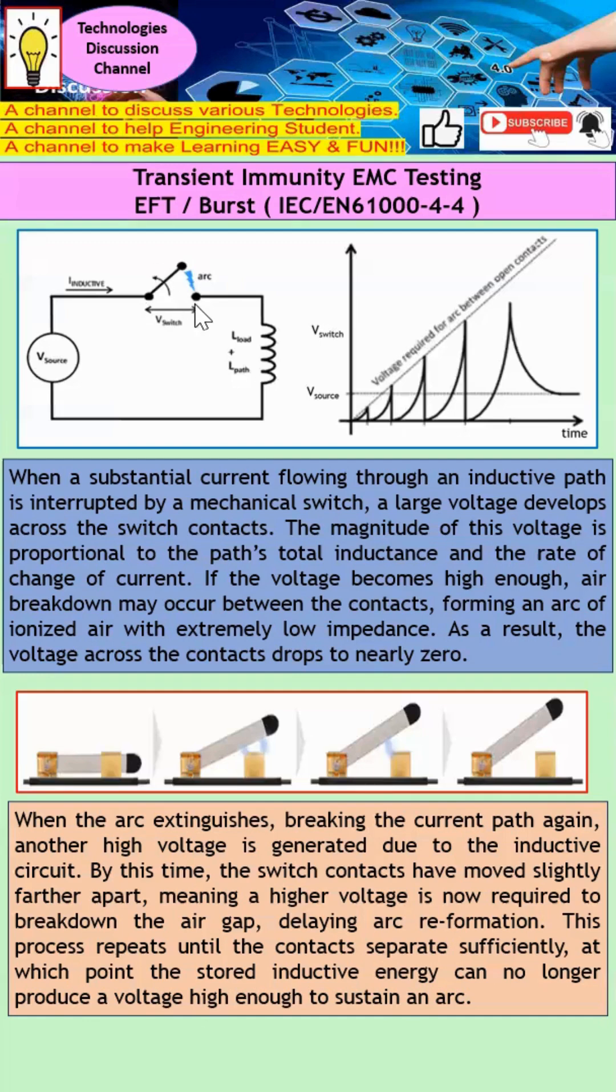When you actually open the switch, you can imagine that a large voltage actually develops across this switch contact. The magnitude of this voltage is in fact proportional to the path's total inductance and also the rate of change of current. So if this voltage becomes high enough, air breakdown may occur. What does this air breakdown mean? It means that arcing may actually occur.